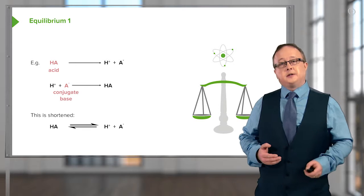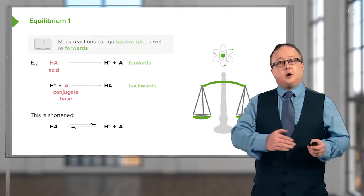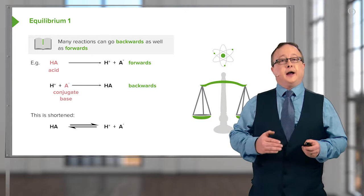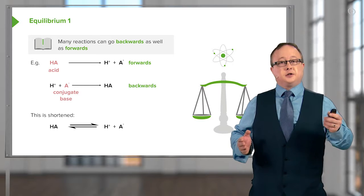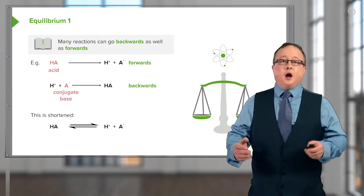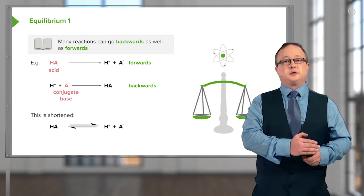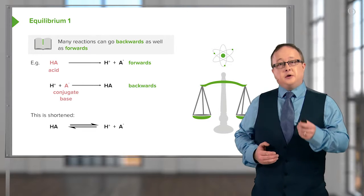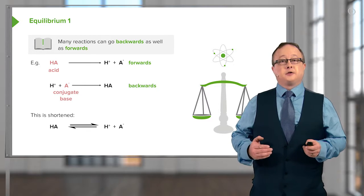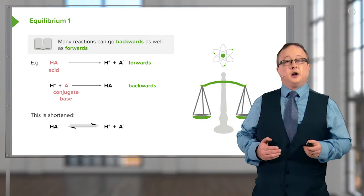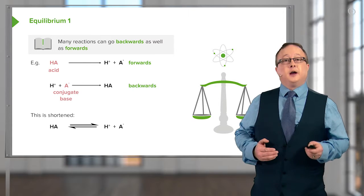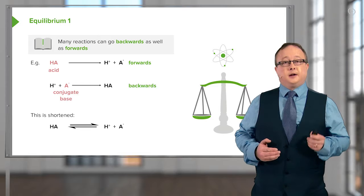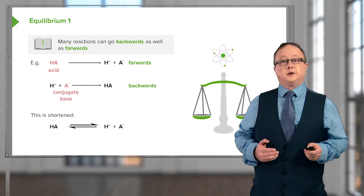In other words, what this means is we have a reaction going forward where we have HA separating out into H-plus and its conjugate base, and we have the reaction going backwards. And this is how it is often described. And when you see these single-headed arrows going in opposite direction, you know that what you're dealing with is a dynamic equilibrium.